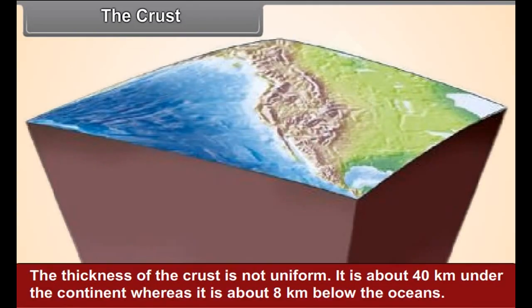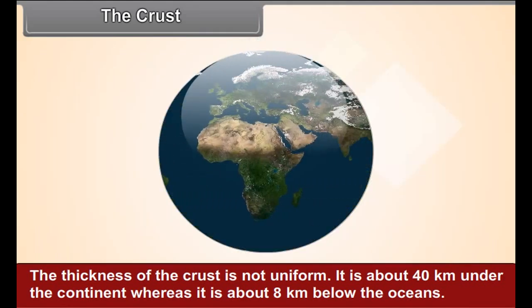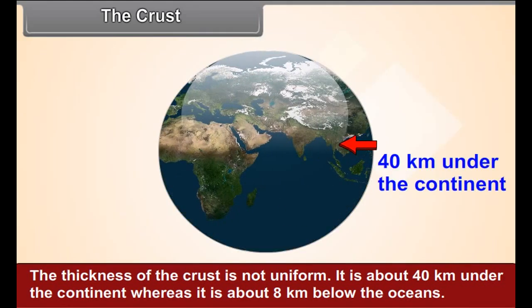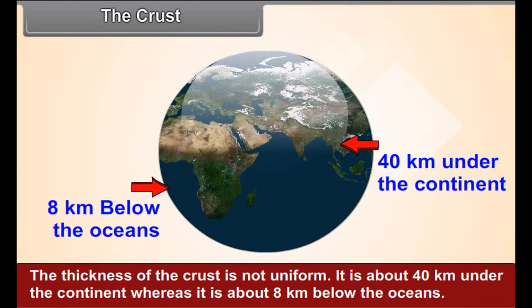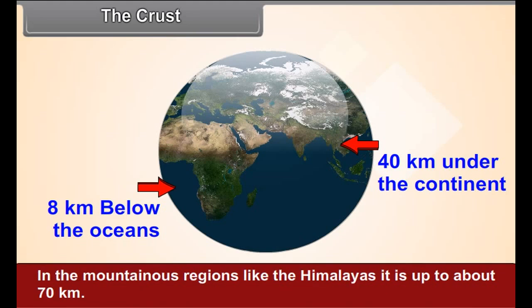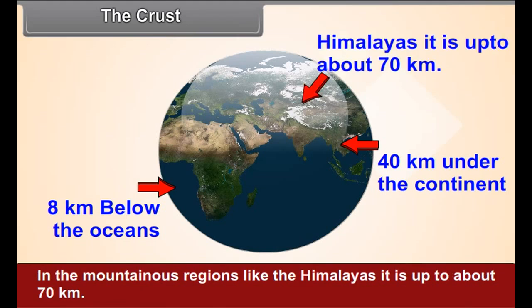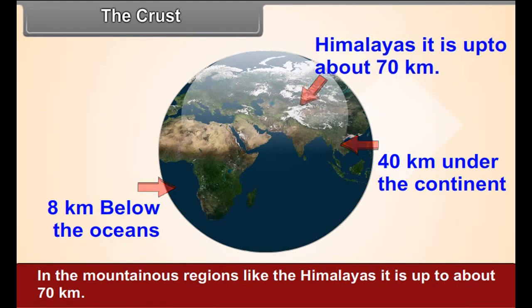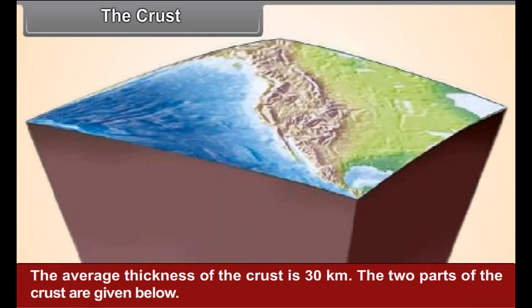The crust. The thickness of the crust is not uniform. It is about 40 kilometers under the continent whereas it is about 8 kilometers below the oceans. In the mountainous regions like the Himalayas, it is up to about 70 kilometers. The average thickness of the crust is 30 kilometers. The two parts of the crust are given below.